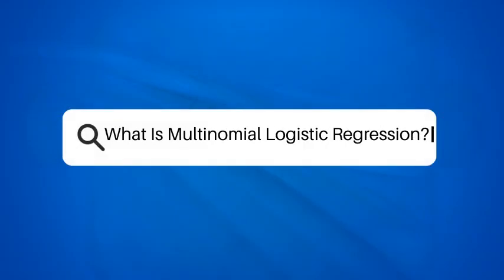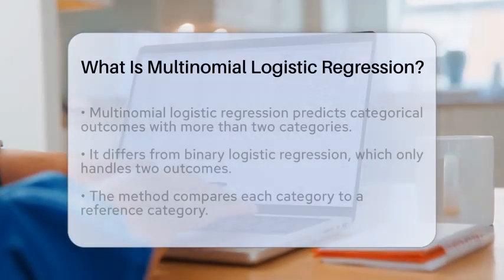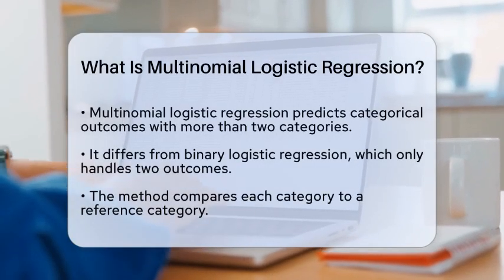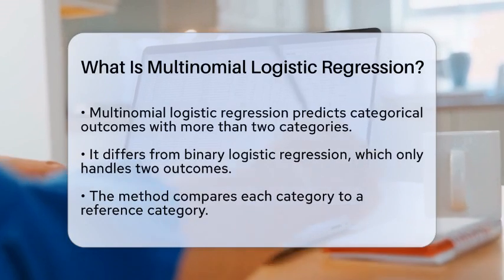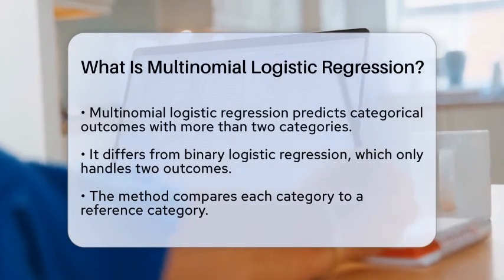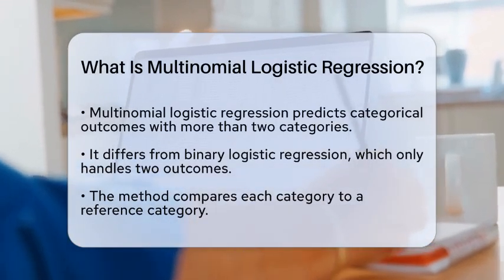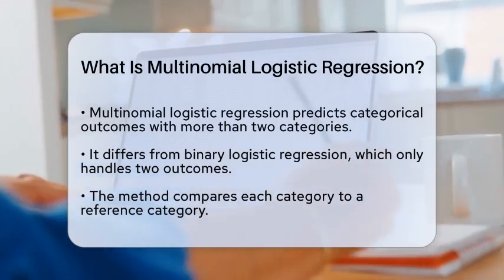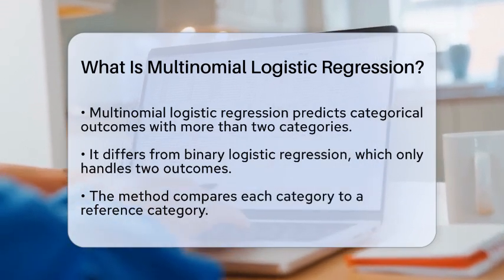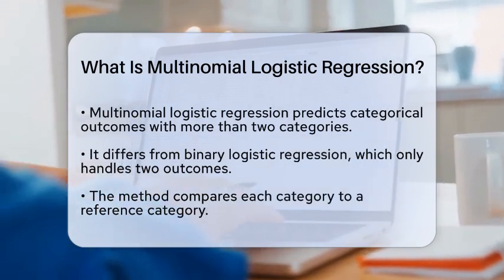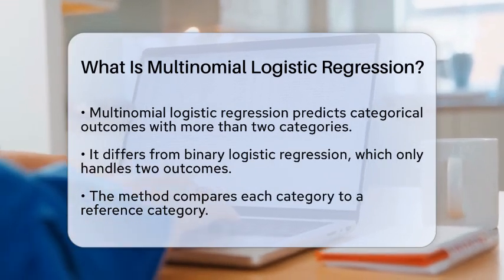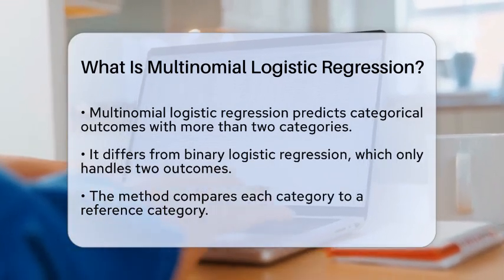What is multinomial logistic regression? Imagine you are trying to predict the type of fruit someone will choose based on their preferences and characteristics. You have several options: apples, bananas, or cherries. The challenge is to understand how different factors influence this choice. This is where multinomial logistic regression comes into play.